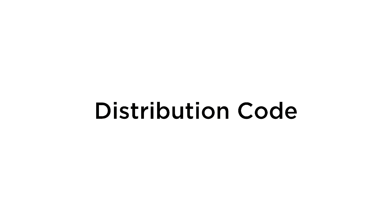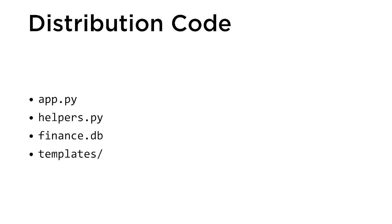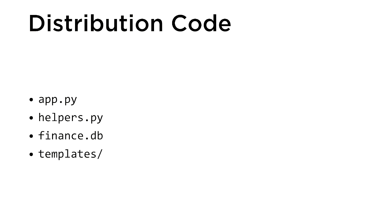Before we dive into the features you'll implement, let's look at the distribution code provided as a starting point. The distribution code comes in several parts: a few Python files — app.py and helpers.py — a SQLite database called finance.db, and a folder filled with templates. We'll walk through each part of the distribution code one file at a time.